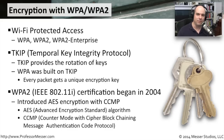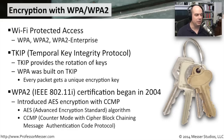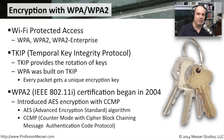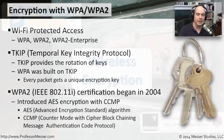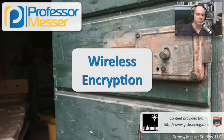CCMP is the fundamental protocol used to encrypt data inside a WPA2 wireless network. As you look at your wireless settings, you may see options such as WPA2 with TKIP or WPA2 with CCMP. If you have the ability to do so and all devices on your network support it, WPA2 with CCMP is probably the one you want to choose.